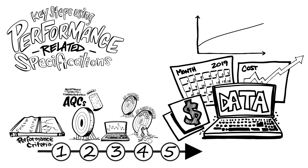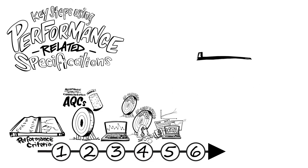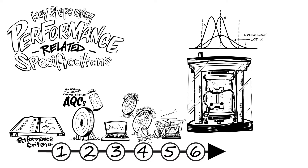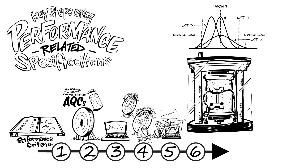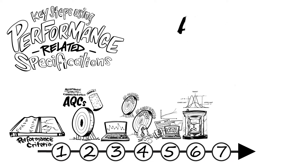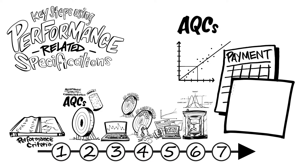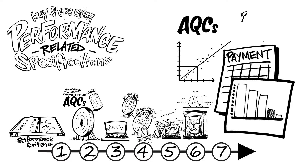The specifications should also include provisions for non-conforming results that fall beyond the range of the PRS payment provisions. Step 6: During construction, proper quality assurance practices are performed by the contractor. The AQCs for each sub-lot and lot are sampled and tested per the sampling and testing plan by the agency. Step 7: For each lot, the measured values of the AQCs are used with the payment provisions from the specifications to compute the pay factor applicable to each AQC. The pay factors for various AQCs are combined as outlined in the specifications.